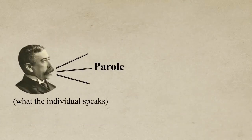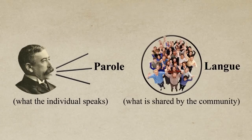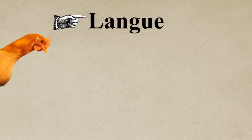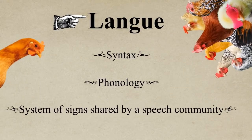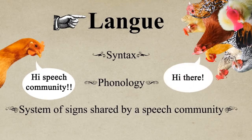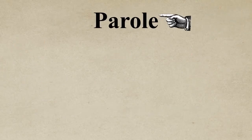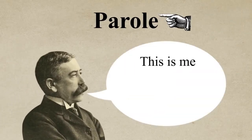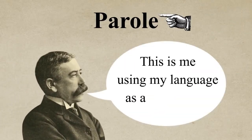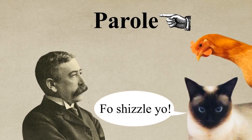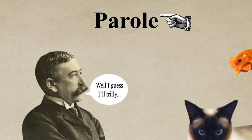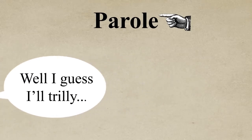Thirdly, Saussure distinguishes between the use of language, parole, and the system of language, langue. Langue, being the system of language such as syntax or phonology, is an abstract system. Parole, on the other hand, is the use of that language, and this is an individual matter. Have you noticed that people have their own language quirks? Well, this is the individual side — the actual use of language.